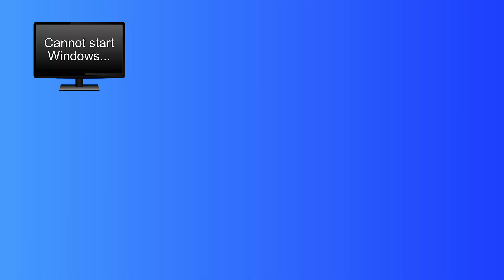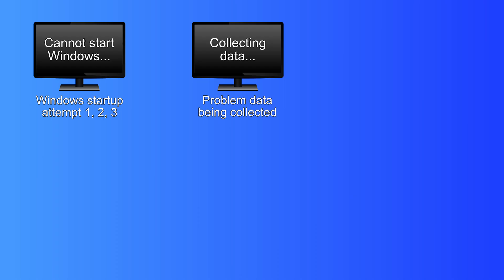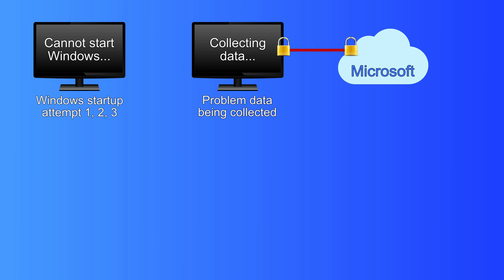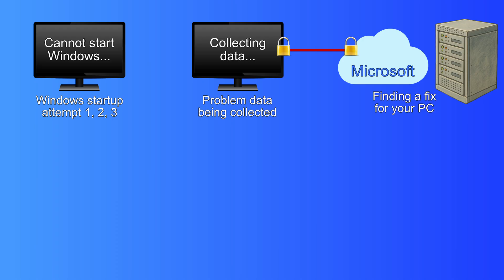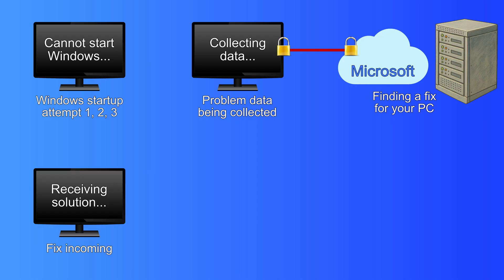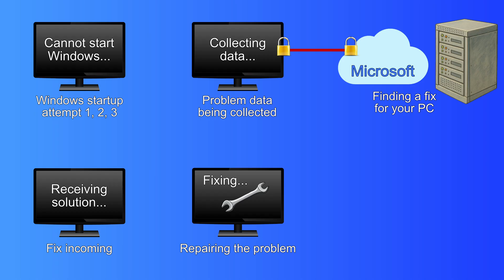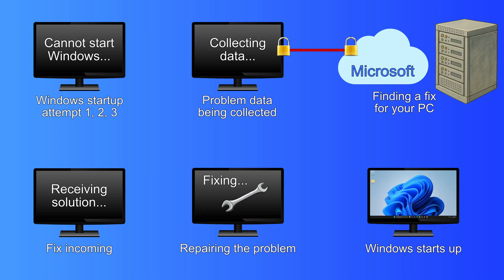Well, let's suppose your computer won't boot up into Windows due to a critical error. Windows will try to start up a few times. If Windows still cannot start up, then data will be collected about the problem. Your computer will send that data to the Microsoft Cloud. Microsoft say that it uses a secure connection when using Quick Machine Recovery. Their database, that is regularly updated, will search for a solution for your computer. If a solution is found, it will be sent back to your PC, and the fix will then get to work. Once the fix has corrected the problem, Windows will start up as it normally does.